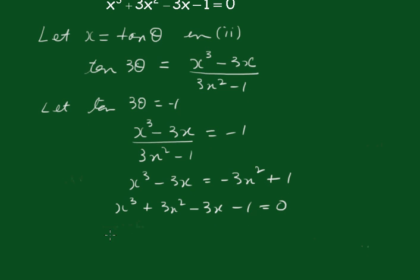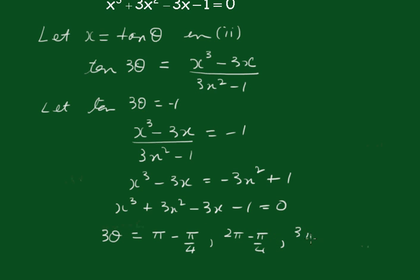So tan3θ = −1 is a solution. Therefore 3θ must equal — we're in the second quadrant — π − π/4, then in the fourth quadrant 2π − π/4, and going round again adding another 2π to the first: 3π − π/4.